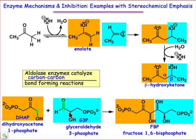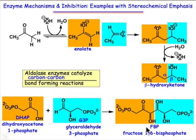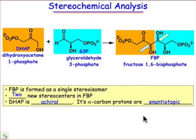There's already one stereocenter present in that substrate molecule. We'll end up making fructose 1,6-bisphosphate, which is a precursor to some sugar. The new carbon-carbon bond formed is between the nucleophilic partner in orange and the electrophilic partner in blue, so you can see that two new stereocenters are formed. Analyzing this reaction in more detail, we can see that there's a single stereoisomer — with three stereocenters altogether, only one diastereomer and one enantiomer are present. The two new stereocenters are at the nucleophilic carbon and the electrophilic carbon.